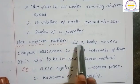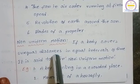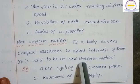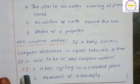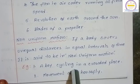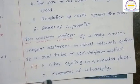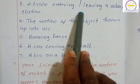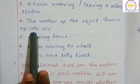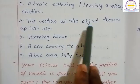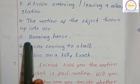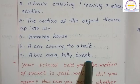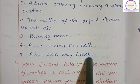Non-uniform motion: If a body covers unequal distance in equal intervals of time, it is said to be in non-uniform motion. Examples: a boy cycling in a crowded place, movement of housefly, a train entering or leaving a railway station, the motion of the object thrown up into air, running horse, a car coming to a halt, a bus on a hill track. These are non-uniform motion.